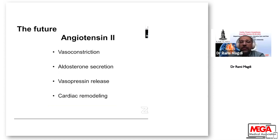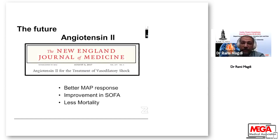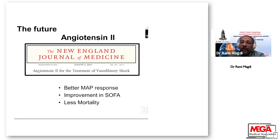Angiotensin-2 — involved in vasoconstriction, aldosterone secretion, vasopressin release, and cardiac remodeling — was published in the New England Journal of Medicine. It was used for the treatment of vasodilatory shock and provided better mean arterial pressure response, improved SOFA score, and less mortality.